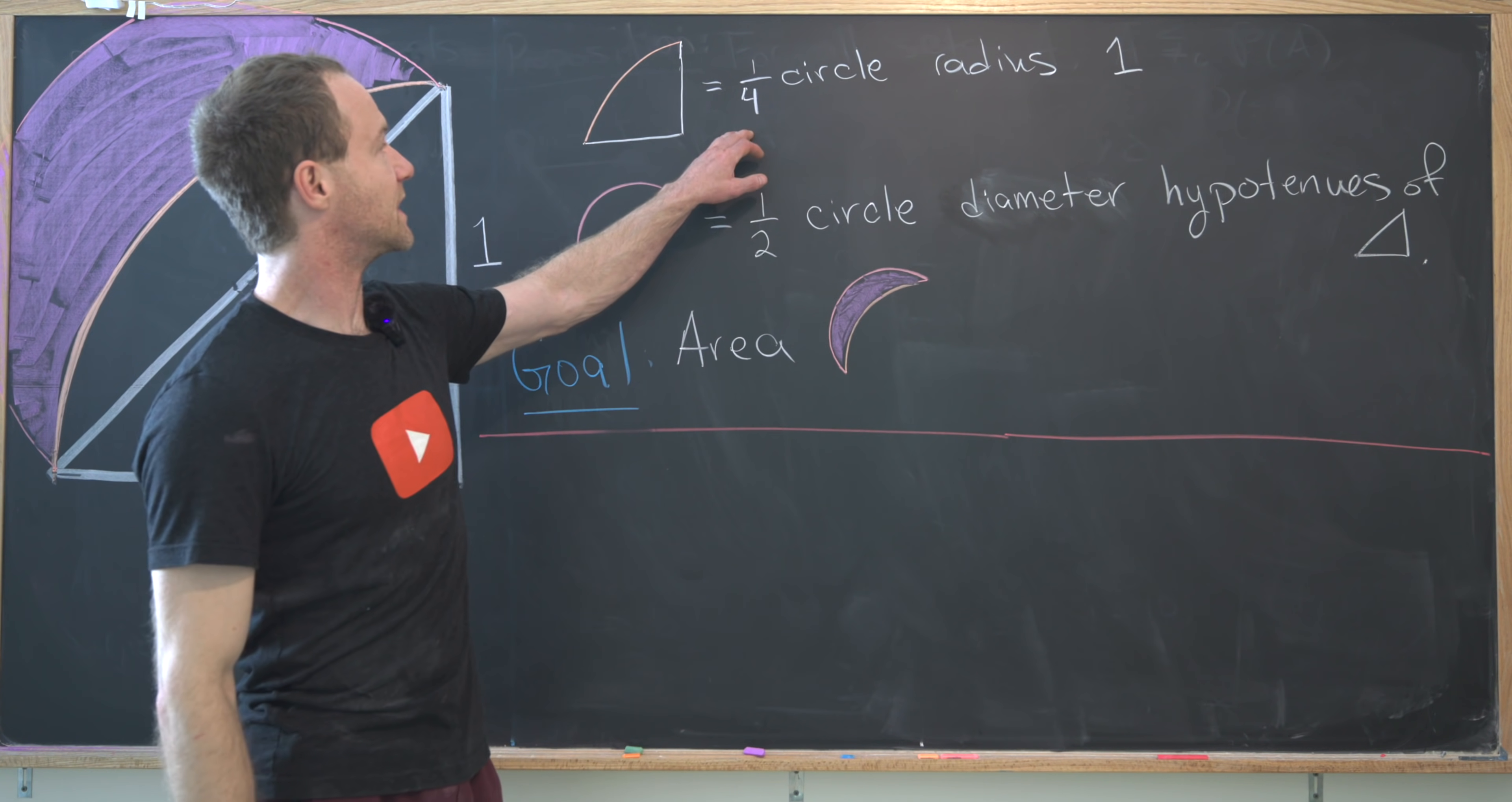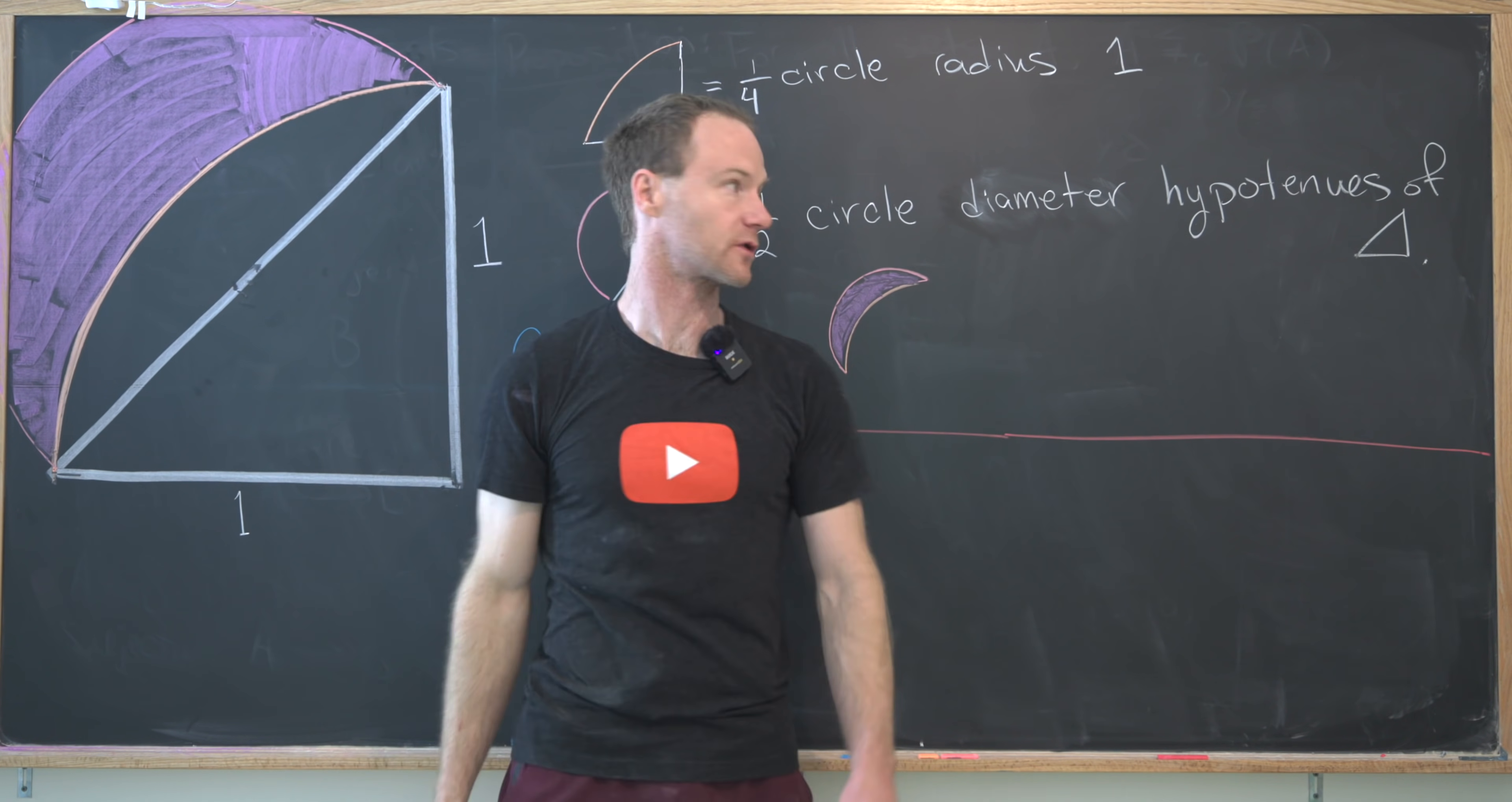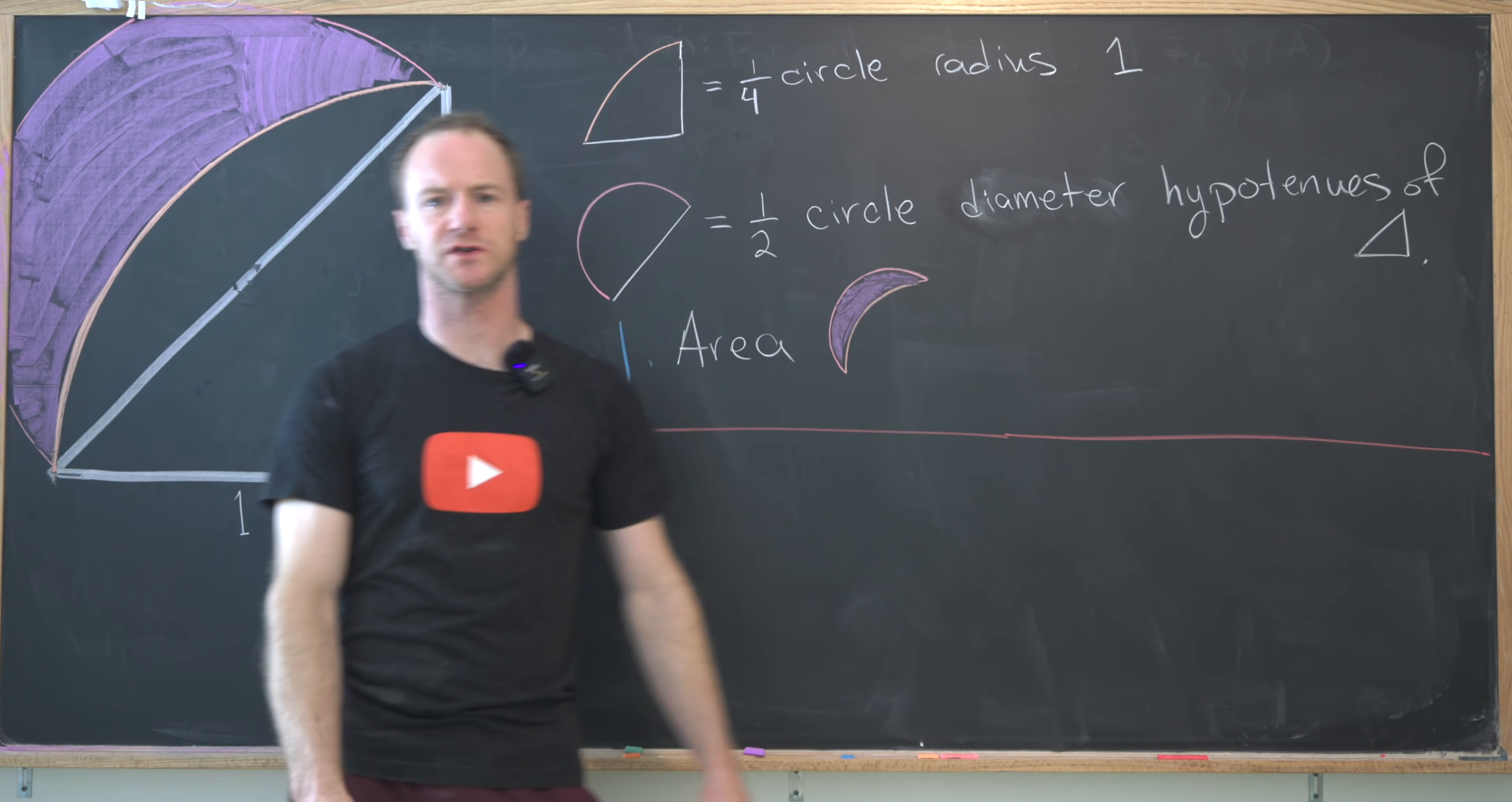So I've notated that up here. This is a quarter circle radius one. And then along the hypotenuse of the triangle, I've constructed a half circle, and I've constructed this half circle so that the diameter is the hypotenuse of the triangle. And then our goal is to find the area of this thing that's called a lune. So that is inside of this half circle, but outside of this quarter circle.